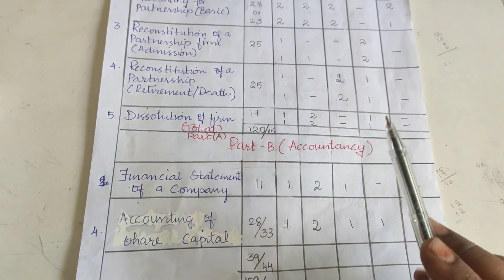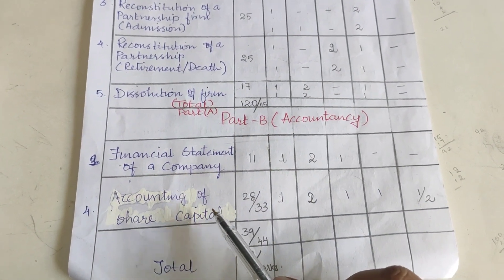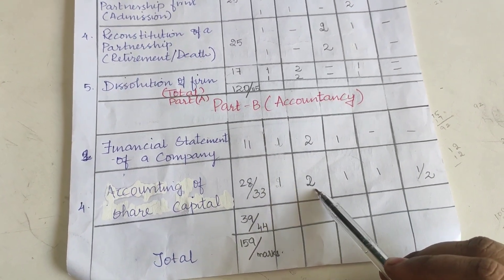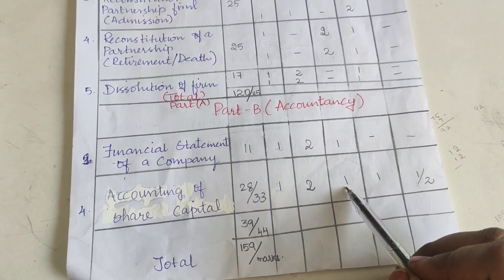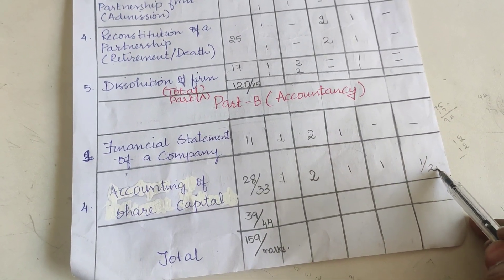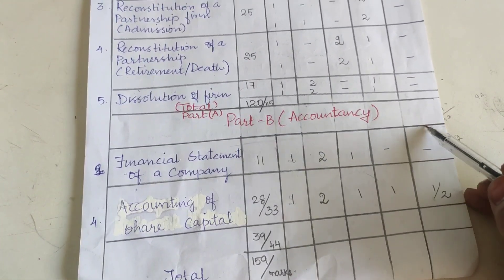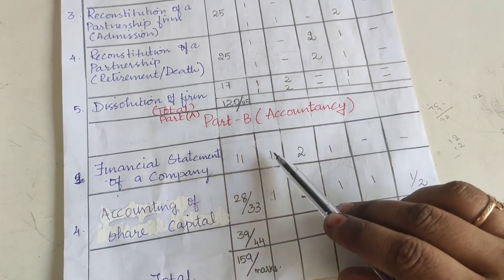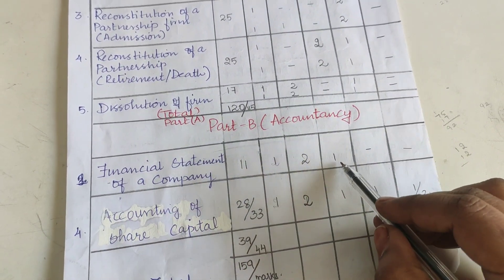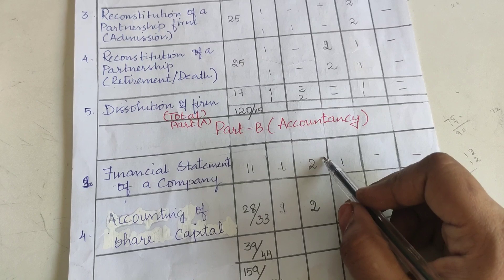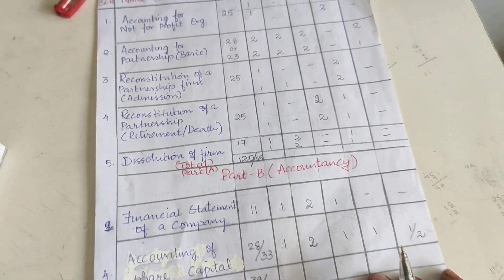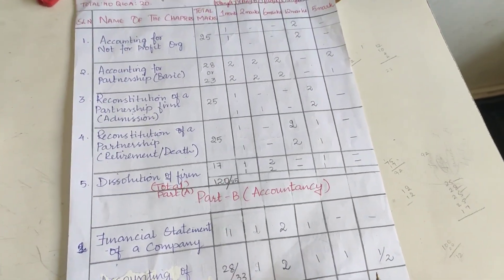In Part B, Accounting for Share Capital is the most important chapter. One mark will be asked, two mark will be asked twice, six marks will be asked, 12 marks will be asked, and even practical questions can be asked — one or two. Similarly, the proforma balance sheet will also be asked from the Financial Statement of a Company. Six mark, two mark, and one mark questions will be asked from that chapter as well. This is the overall blueprint based on the model paper.